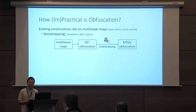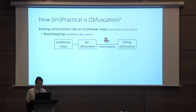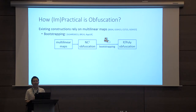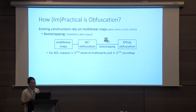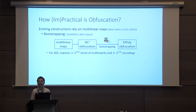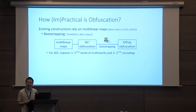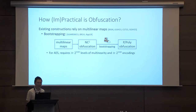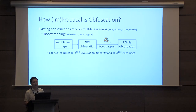I will describe this bootstrapping transformation in greater detail in subsequent slides. While it looks like a very simple, natural, clean framework, if we actually want to instantiate it and use it to obfuscate even a simple functionality like AES or a block cipher, what we immediately see is that we need a multilinear map capable of supporting over 2 to the 100 levels of multilinearity, and publishing over 2 to the 100 encodings. This is an astronomical number, and very, very far from something that we can practically implement using modern computing resources.